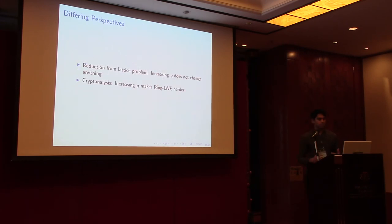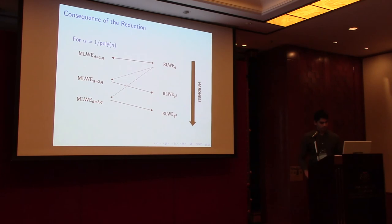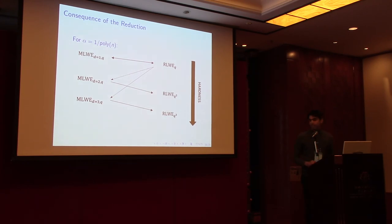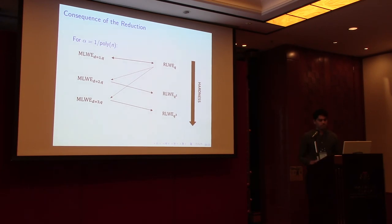Summarizing the different perspectives: cryptanalysis suggests increasing Q makes ring LWE harder, while the theorem from the standard reduction does not change with Q. Building the hardness landscape around our reduction: the top double-ended arrow represents an equivalence between ring LWE and module LWE in rank one; arrows right-to-left come from the trivial reduction from ring LWE to module LWE in any rank; arrows left-to-right come from our main reduction from module LWE to ring LWE. Reading down the right-hand side, the hardness of ring LWE appears to increase as we increase the modulus.